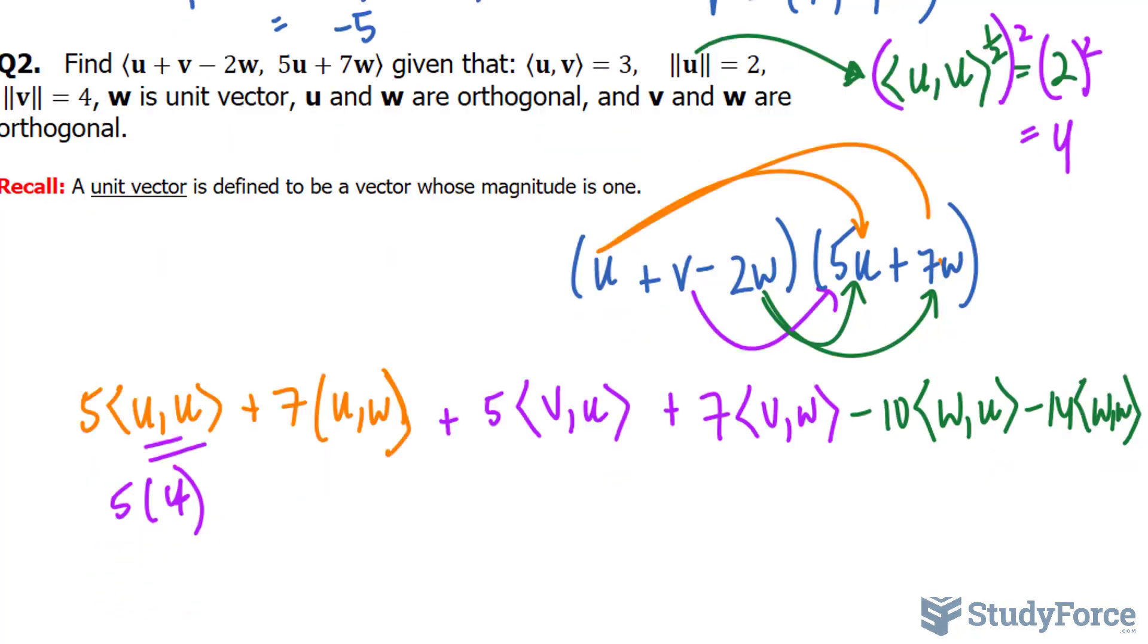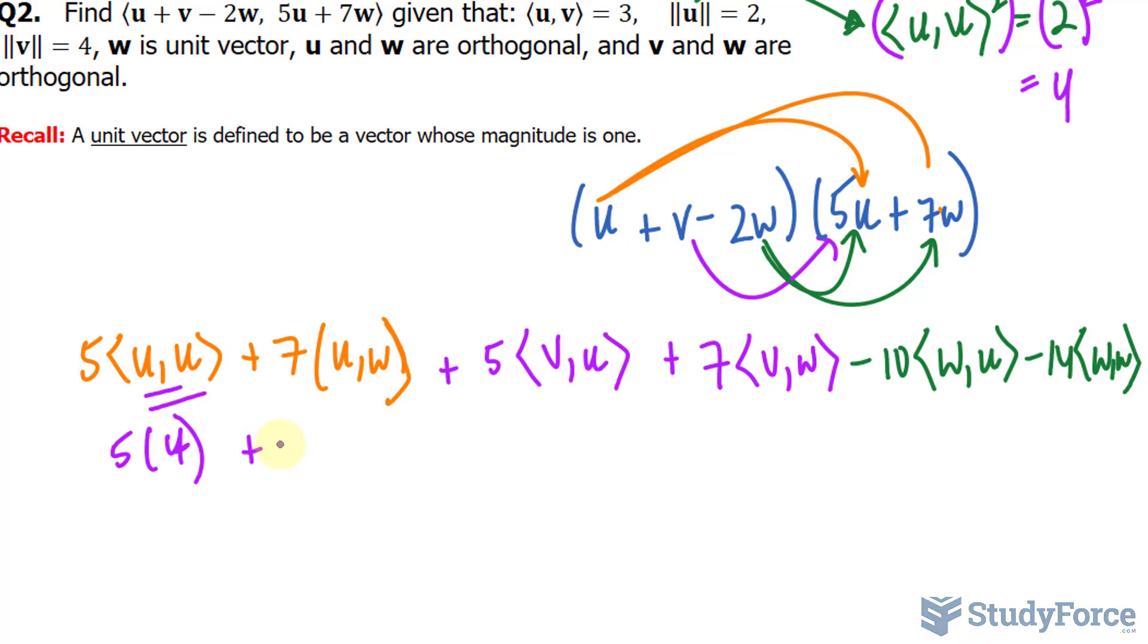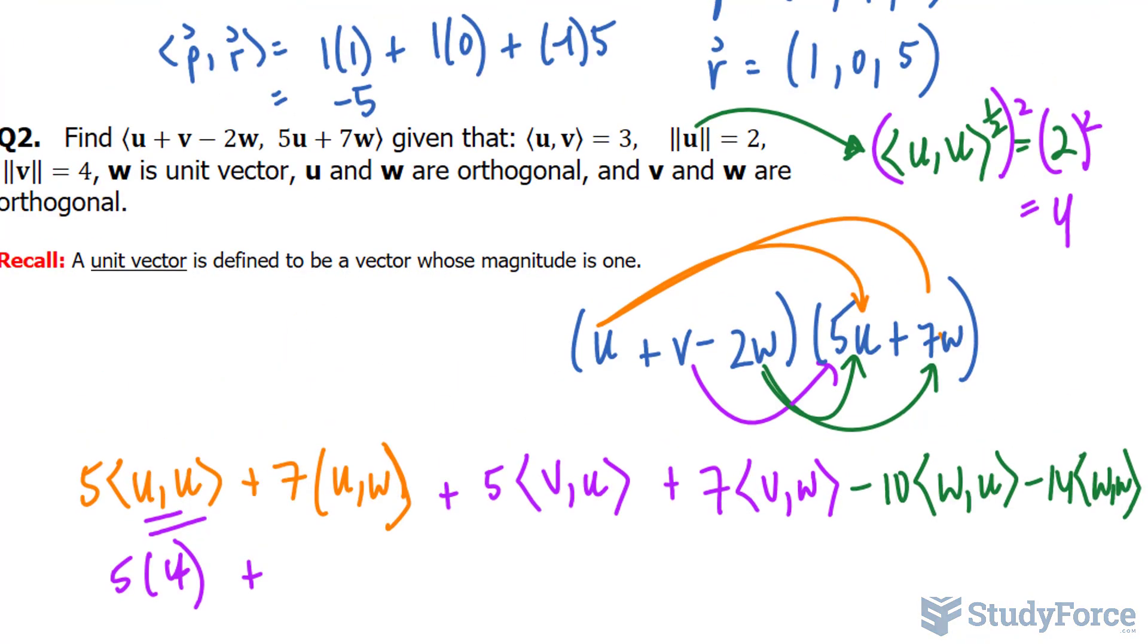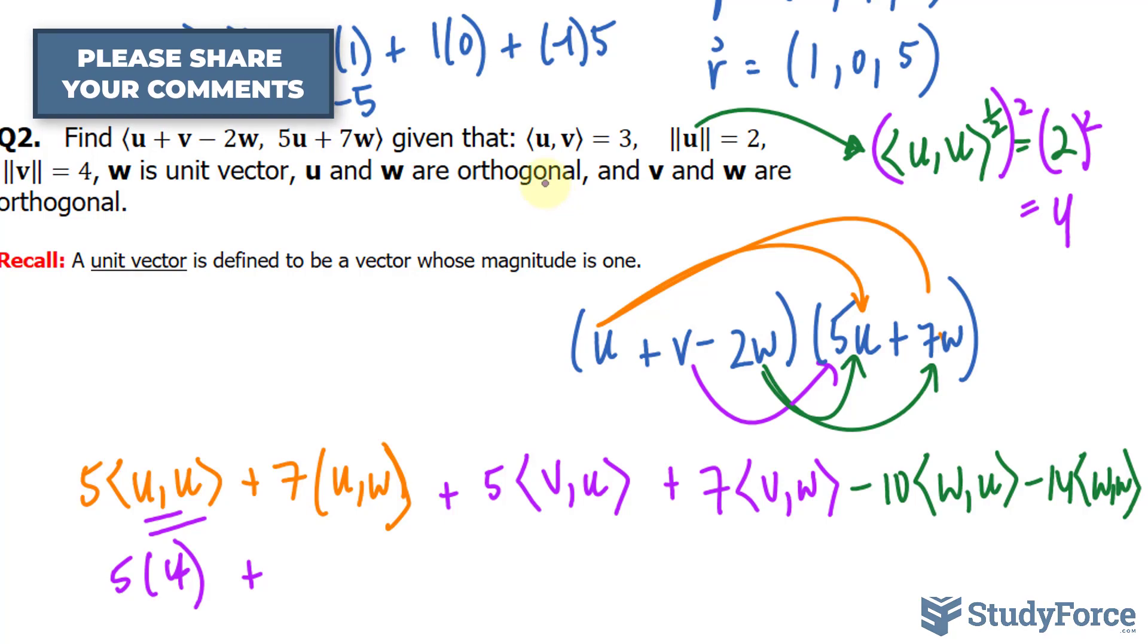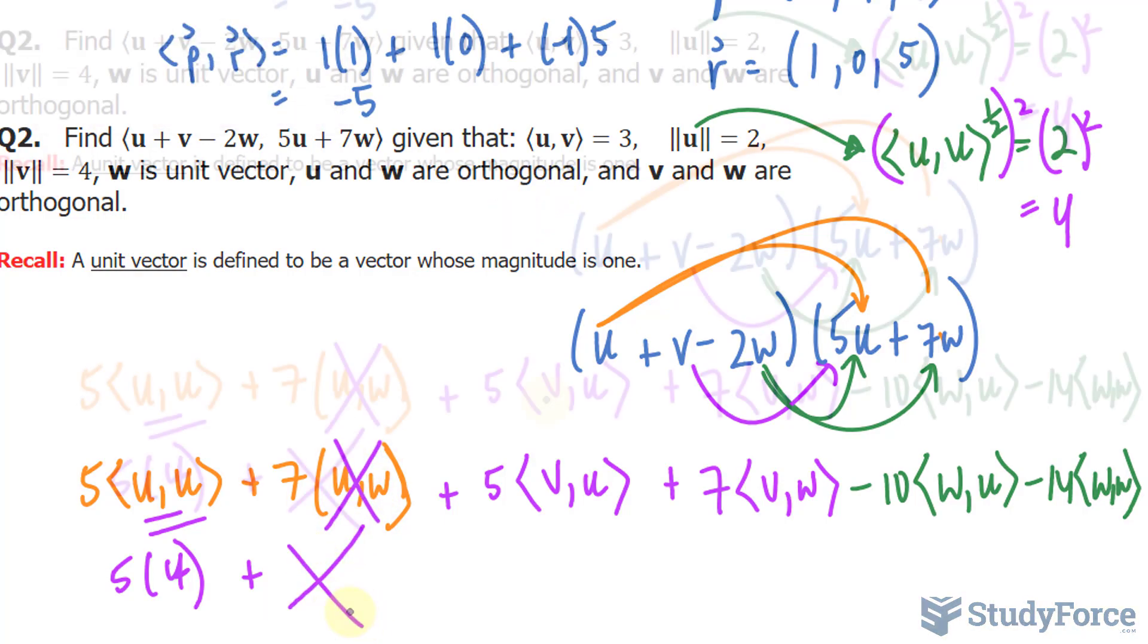That's a 4, not a y. Okay, the next part. This time, the inner product of u and w. We're told that it's orthogonal, so this part will equal to 0, and this term will go to 0.